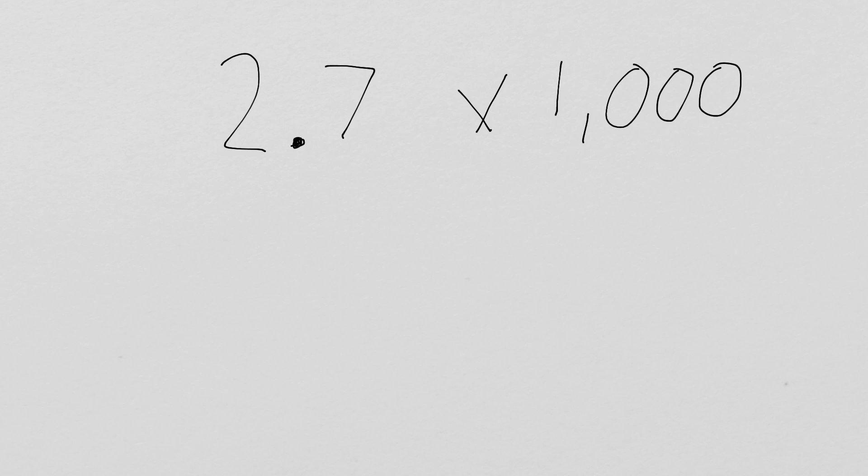Try your hand at adding those zeros in. This time, I've given you 2 and 7 tenths times 1,000. Pause the video, see what your answer is going to come up as when you move the decimal. Well, we have to move the decimal three times because we're at 1,000, and we've got three zeros. So, let's move it.